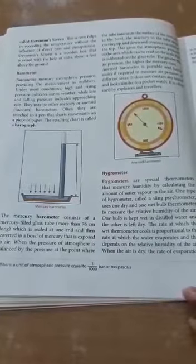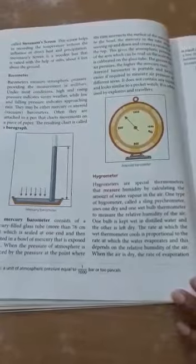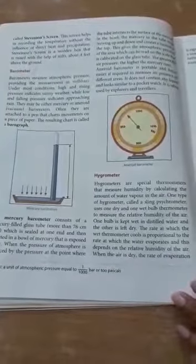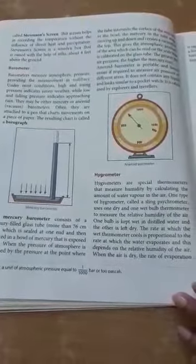This gives the atmospheric pressure of the area which can be read on the scale that is calibrated on the glass tube. The greater the air pressure, the higher the mercury rises.